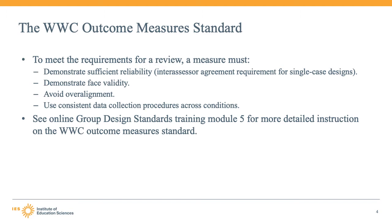Second, the outcome measure must have face validity — that is, it must measure what it claims to be measuring. Third, the measure must avoid overalignment. When an outcome measure is closely aligned or tailored to an intervention, the study findings may not be an accurate indication of the effect of the intervention.